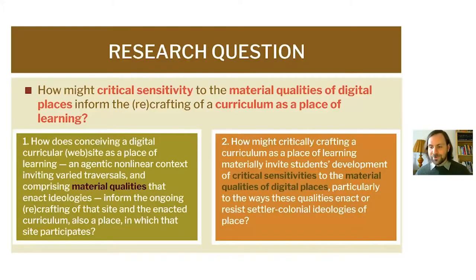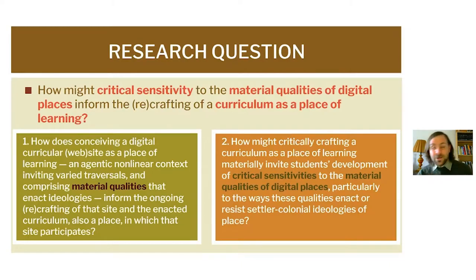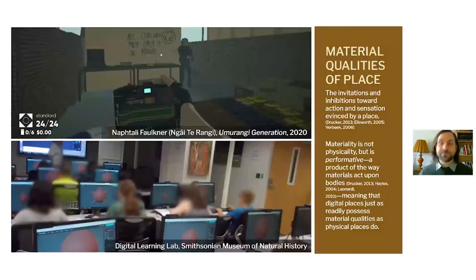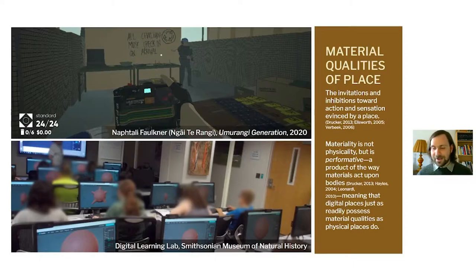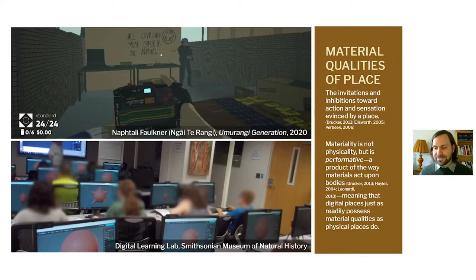I'm also asking: how might critically crafting this curriculum as a place of learning materially invite students' development of their own critical sensitivities to the material qualities of digital places, particularly to the ways these qualities enact or resist settler colonial ideologies of place? To define key terms: the material qualities of place are the invitations and inhibitions toward action and sensation invincèd by a place. In this study, materiality is not the same as physicality — materiality is performative, a product of the ways materials act on bodies, meaning digital places can possess material qualities just as physical places do.